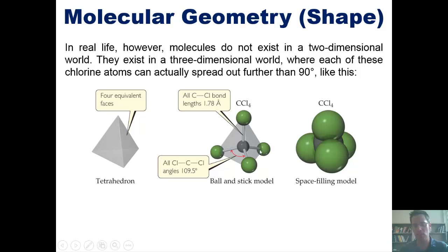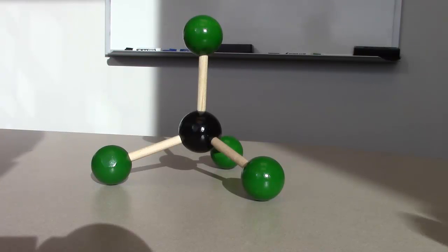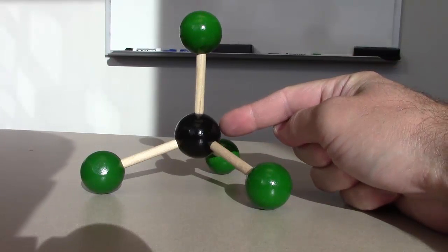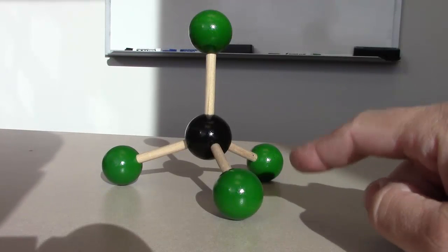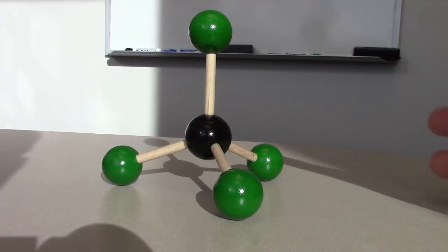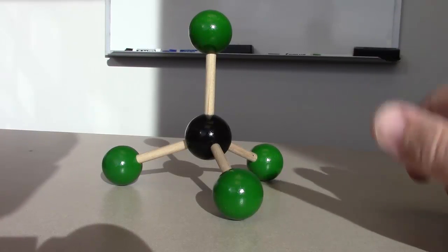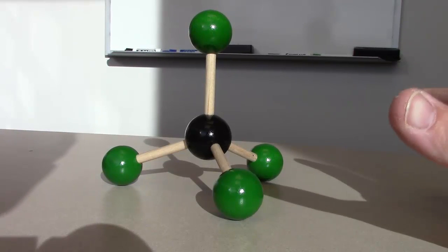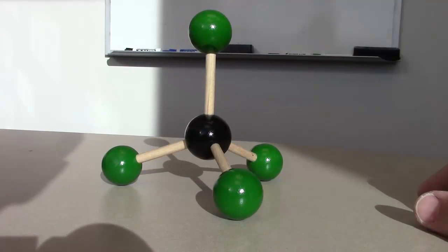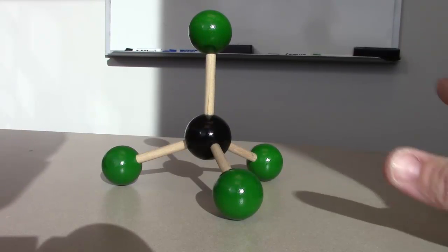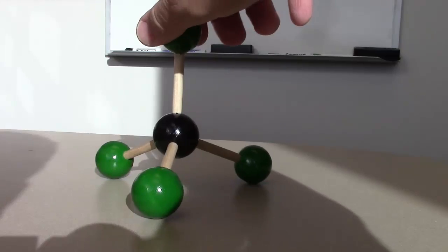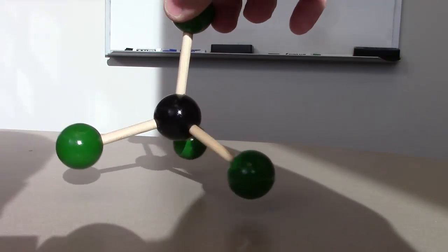The angle between each of these groups is 109.5 degrees. I'll show you that right now in a handheld model. So this is a cute little handheld model. Once again, you can see that this carbon atom which is depicted as a black sphere is surrounded by four individual chlorine atoms in this molecule of carbon tetrachloride or CCl4. As I was just explaining, you can get in real life in the three-dimensional world each of these chlorine atoms to be further apart from each other than 90 degrees as would be the case if you were only in a two-dimensional world.